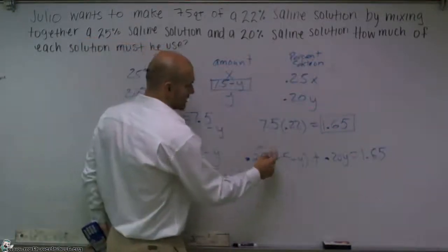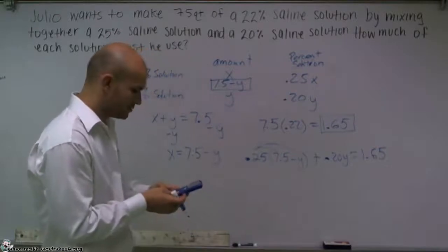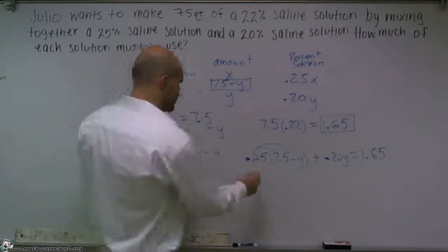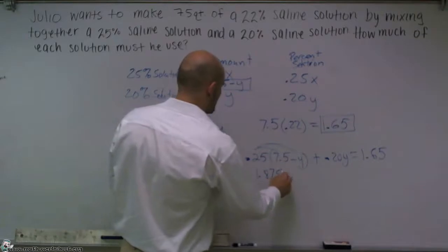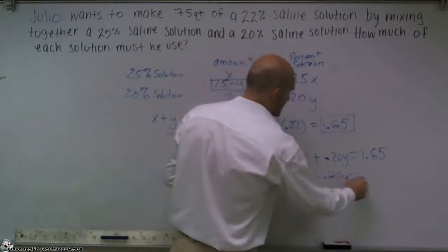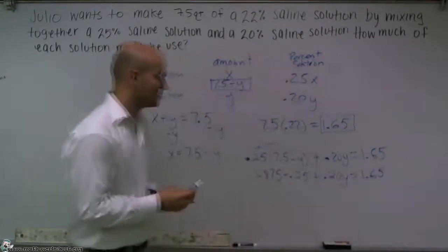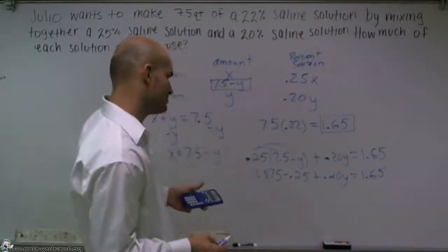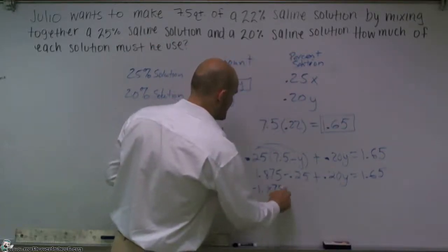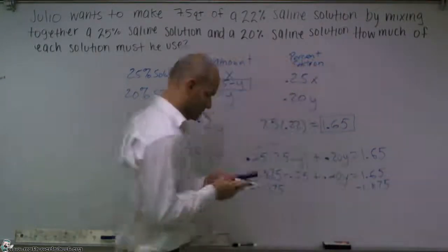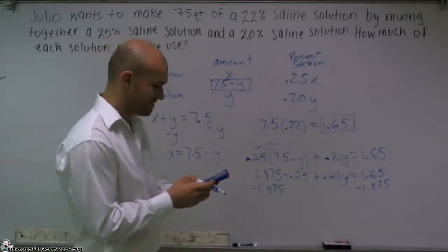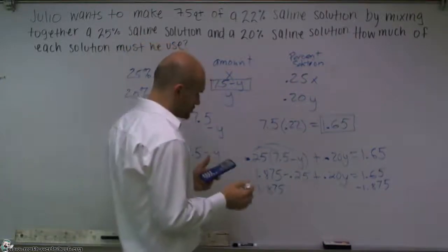Now we have to do a little math, a little algebra. I'll do my distributive property. So 0.25 times 7.5 equals 1.875 minus 0.25y plus 0.20y equals 1.65. Now I can combine my like terms. So that's going to provide me with a negative 0.05. So I'll subtract 1.875. So 1.65 minus 1.875 gives me a negative 0.225.